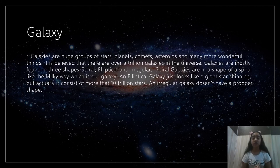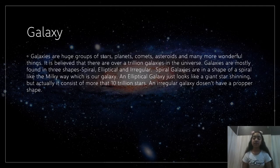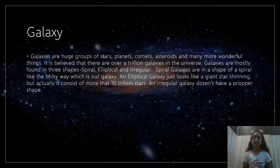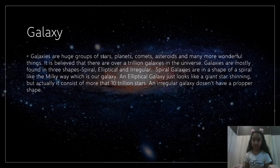Spiral galaxies are in the shape of a spiral, like the Milky Way which is our galaxy. An elliptical galaxy just looks like a giant star which is shining brightly, but it actually consists of 10 trillion stars. An elliptical galaxy is not full of asteroids and such — it just looks like a giant star but actually has lots of things inside it. An irregular galaxy does not have a proper shape.